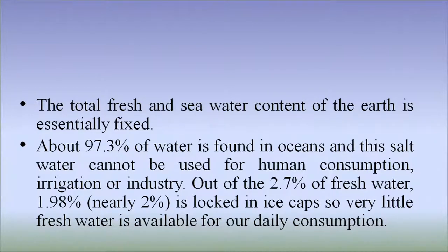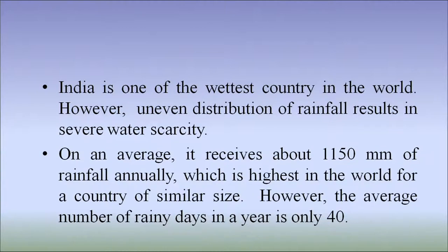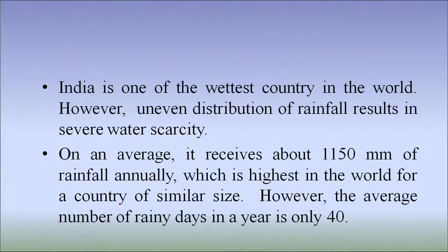So very little fresh water is available for our daily consumption. India is one of the wettest countries in the world. However, uneven distribution of rainfall in different states of India results in severe water scarcity. On an average, it receives about 1150 mm of rainfall annually, which is the highest in the world for a country of similar size. However, the average number of rainy days in a year are only 40.